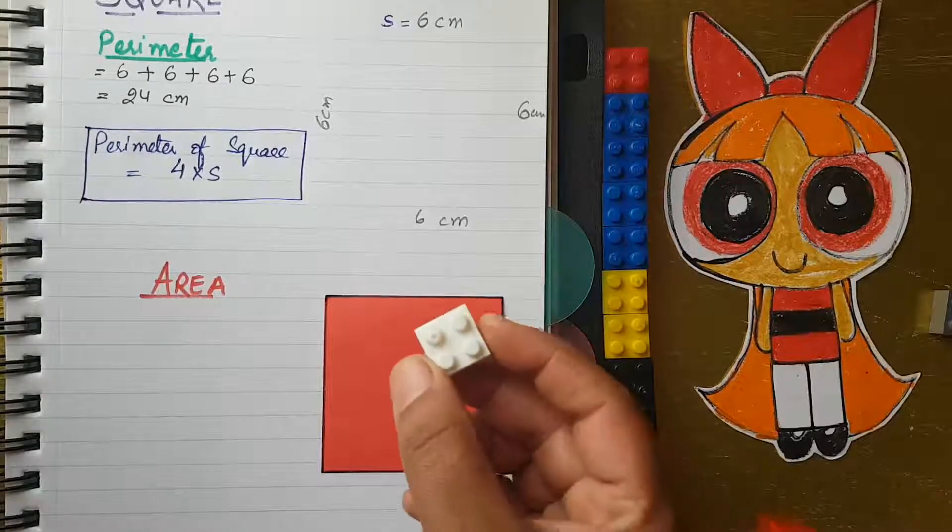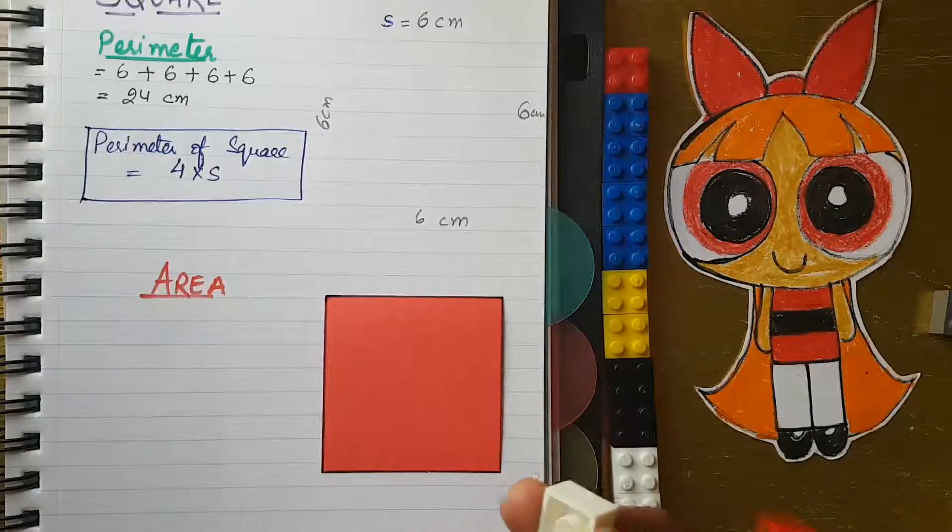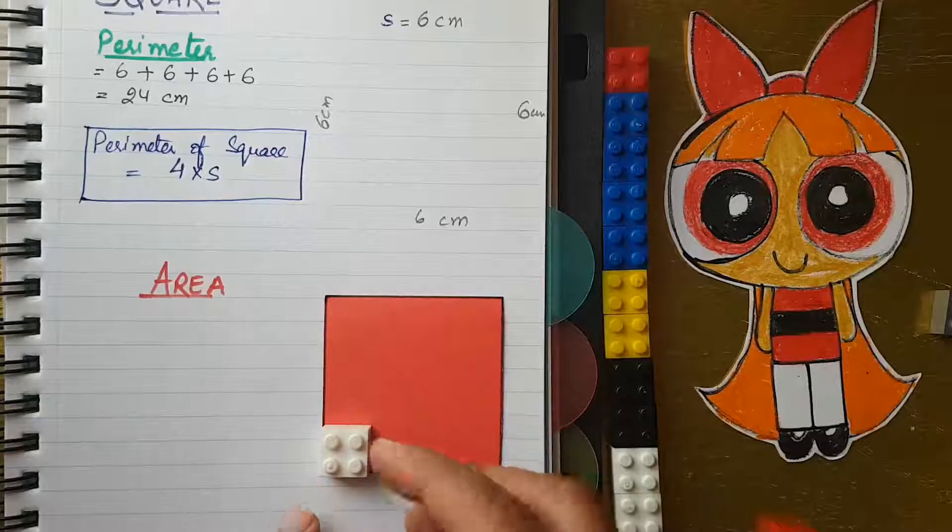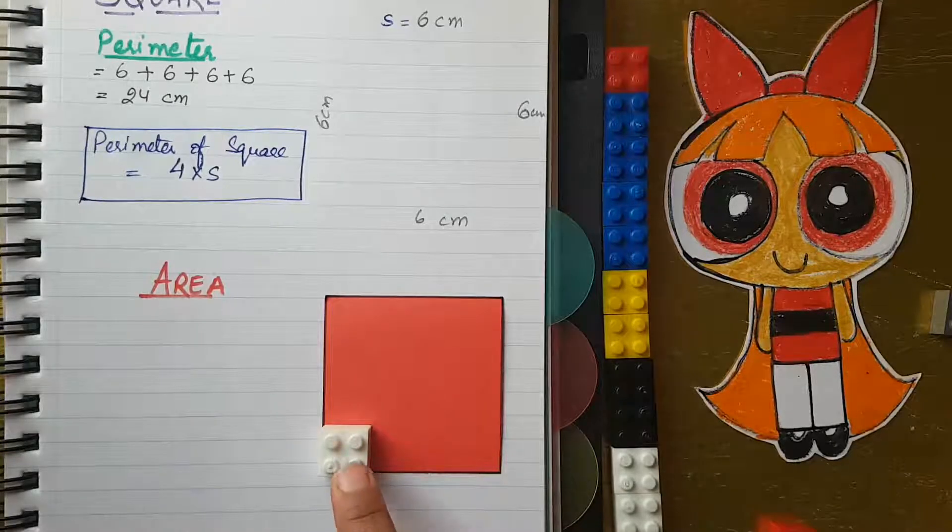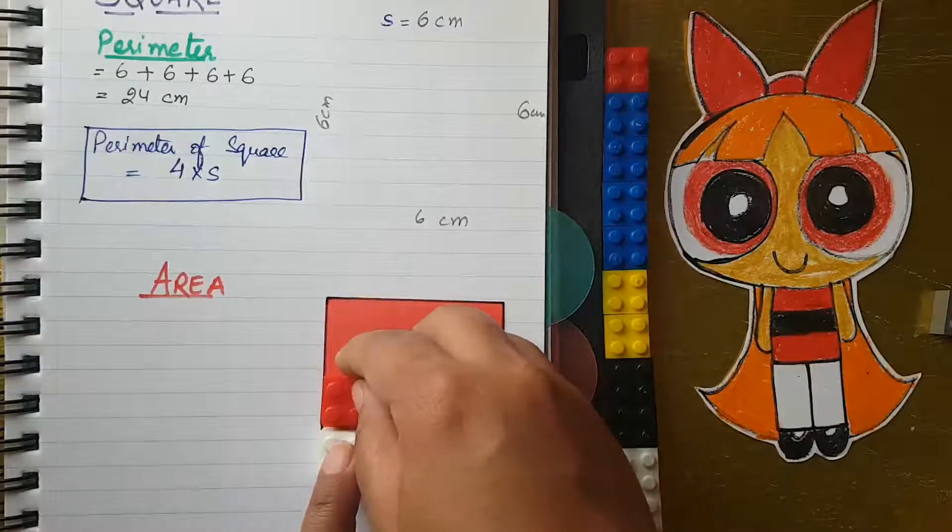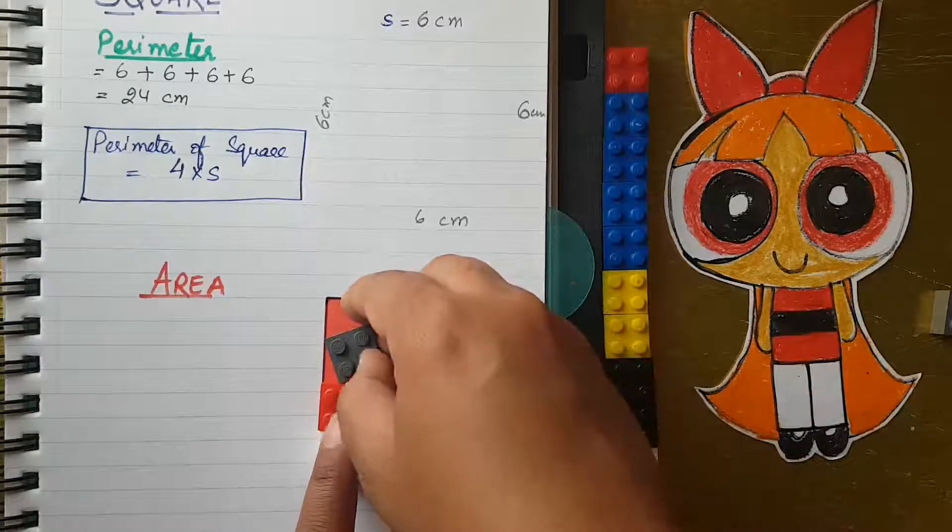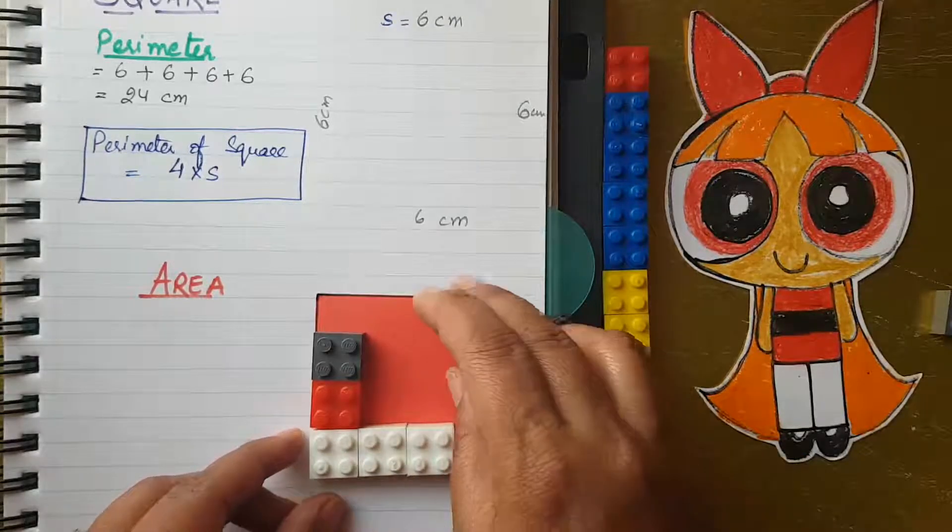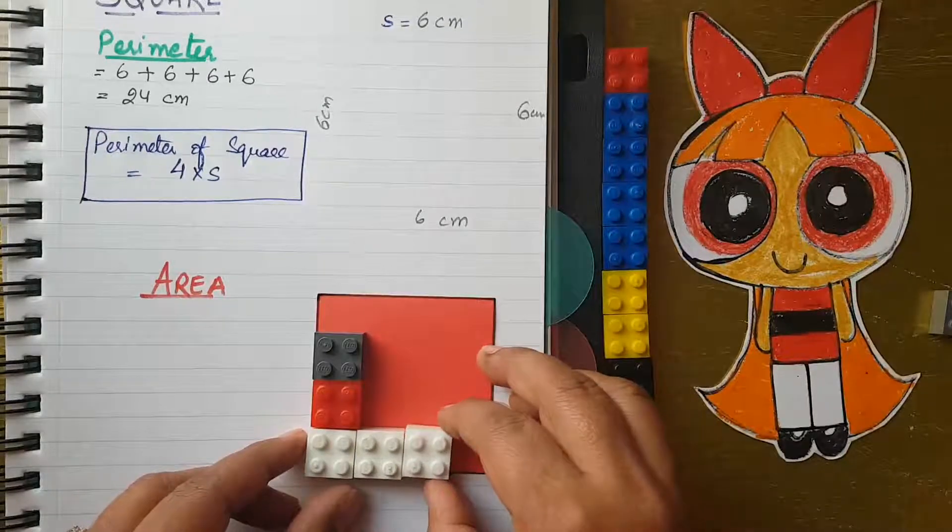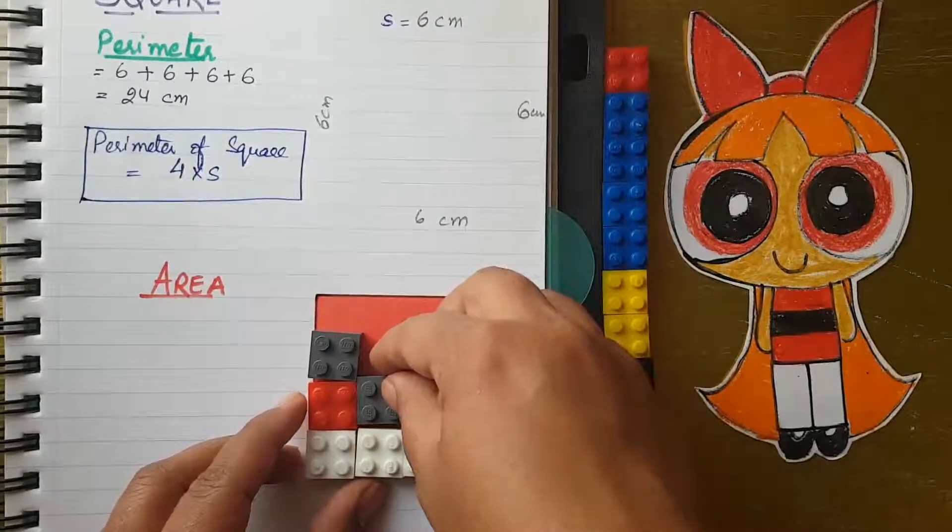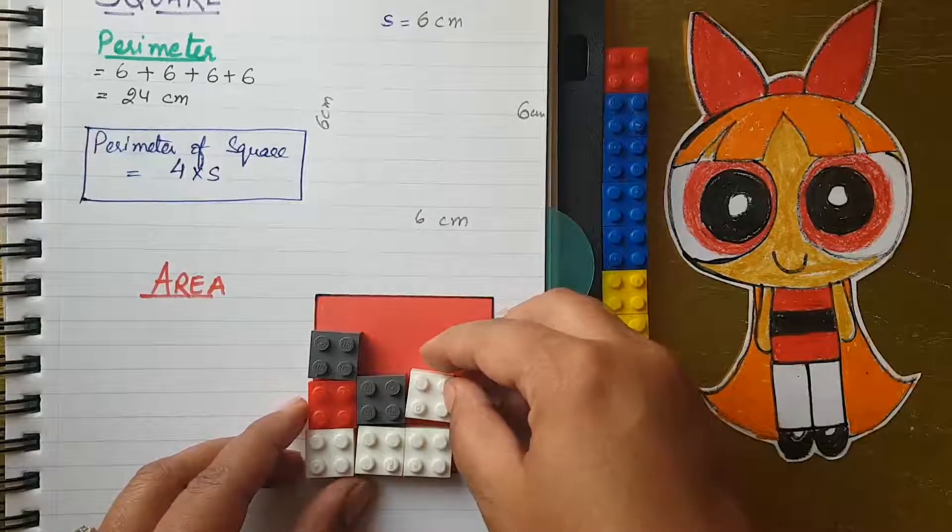I have some Legos. Look, let's see how we will find out the area. What I will do here, I will just put these blocks here, and you can see the area is filled by these blocks. You can use anything. If you have coins, you can use coins to fill it.